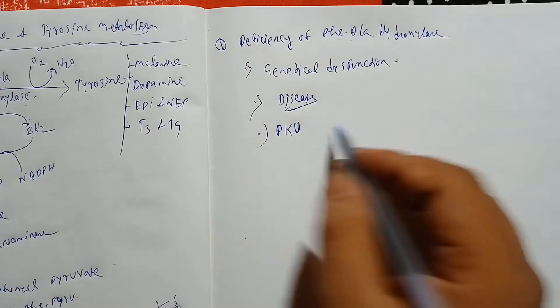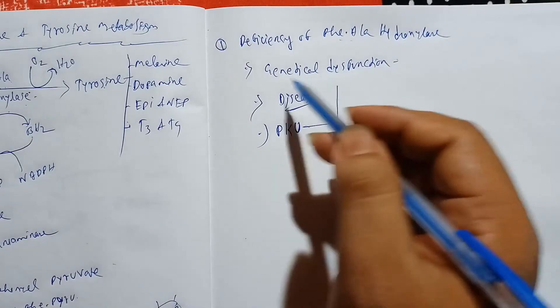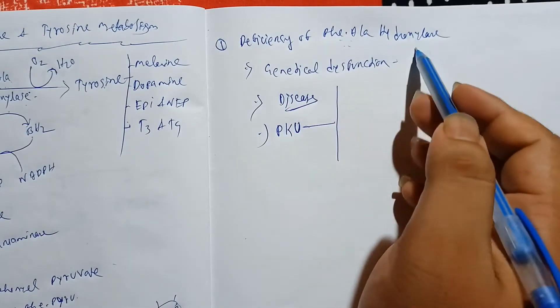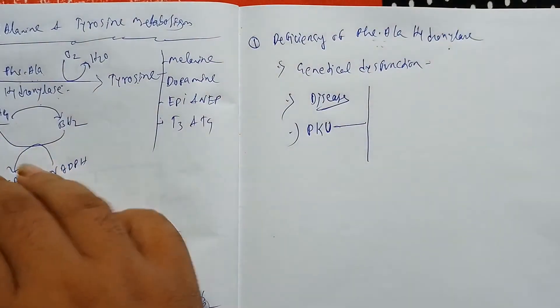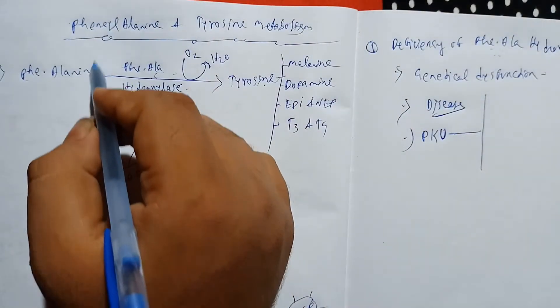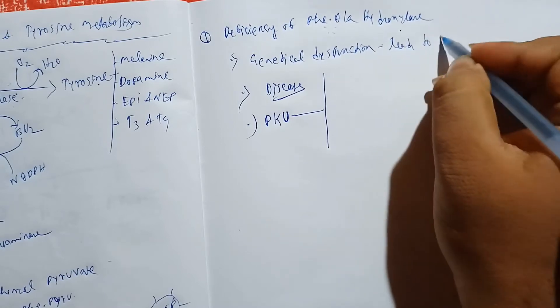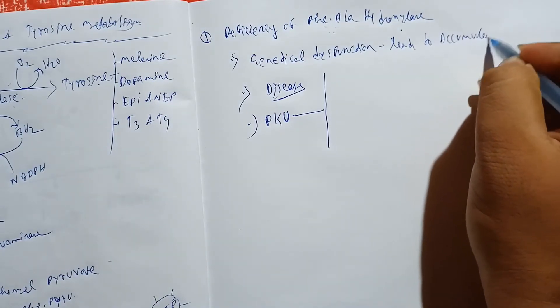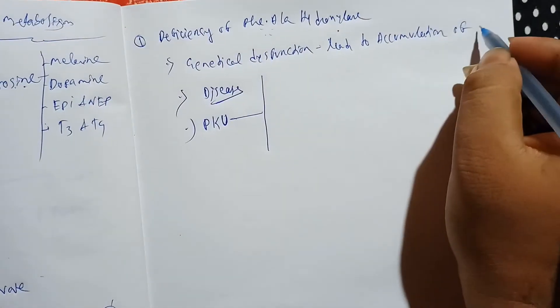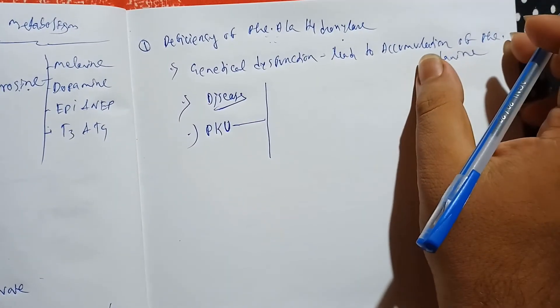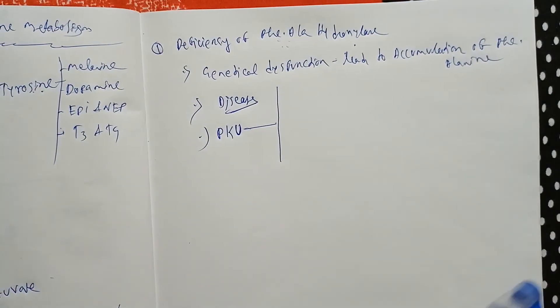In phenylketonuria, there is dysfunction in the genes, which are not able to produce enough amount of the enzyme phenylalanine hydroxylase. This enzyme normally converts phenylalanine into tyrosine. If this enzyme is present in least amount, there will be accumulation of too much phenylalanine, which will ultimately lead to dysfunction within the brain.